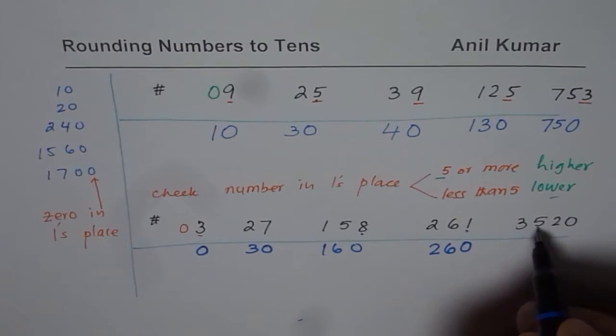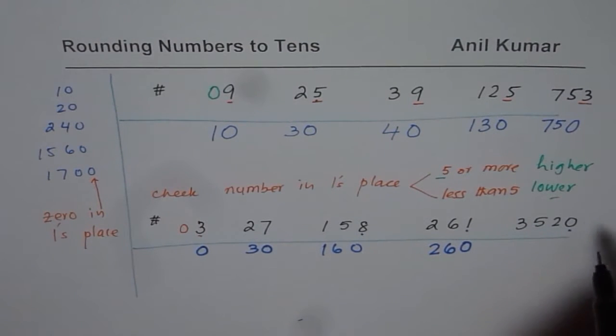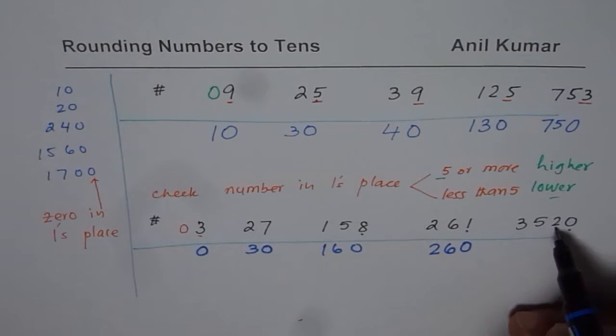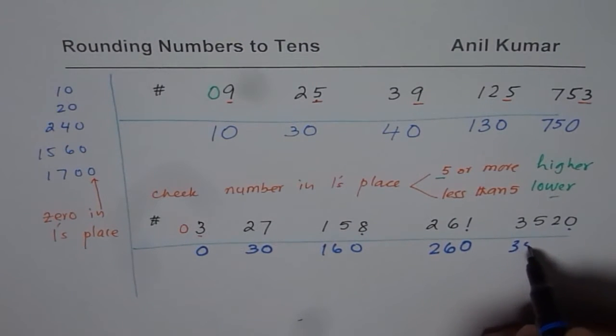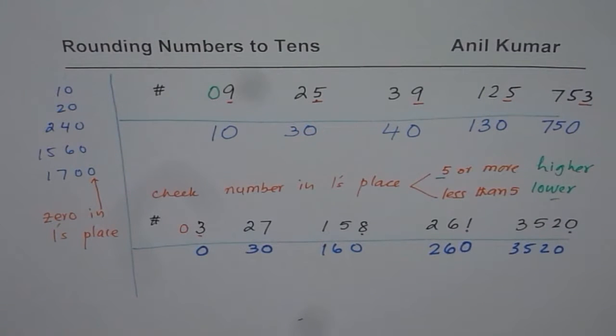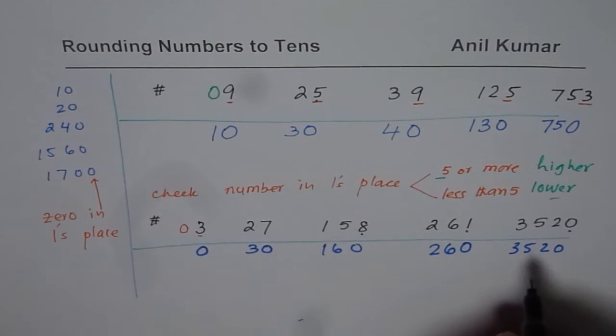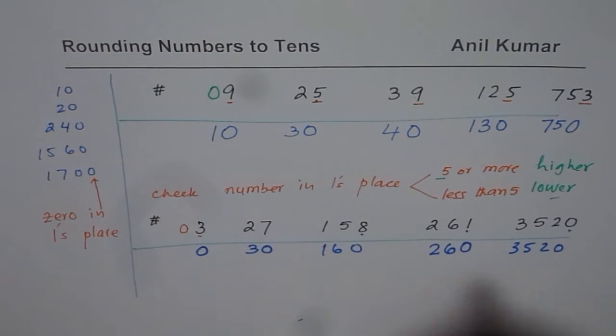How about 3,520? 1's place is less than 5. So we leave it as such. So we get 3,520. Exactly the same number. So you know, sometimes, even after rounding, you get exactly the same number.